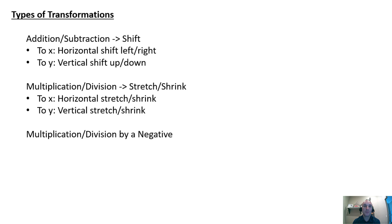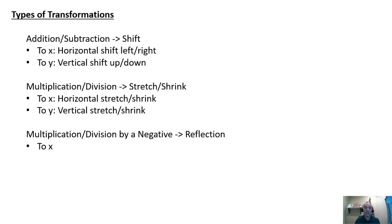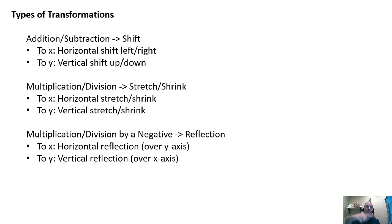Last, we have multiplication or division by a negative. If you multiply or divide by a negative, you get what's called a reflection — a mirror image across the X-axis or the Y-axis. If you multiply or divide X by a negative, the X value changes sign, giving you a horizontal reflection over the Y-axis. Similarly, if you multiply or divide Y by a negative, you get a vertical reflection over the X-axis.